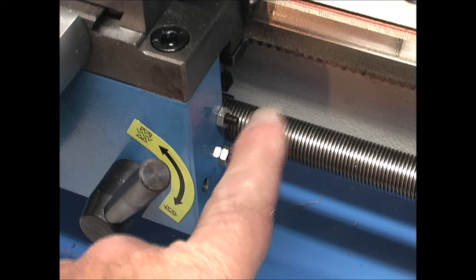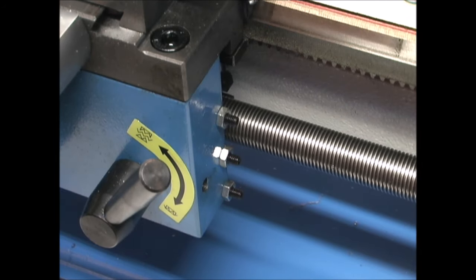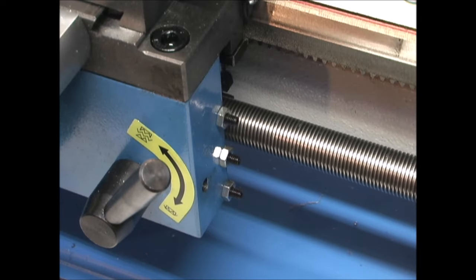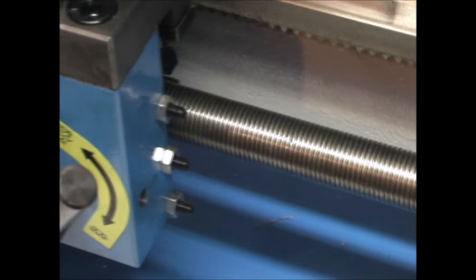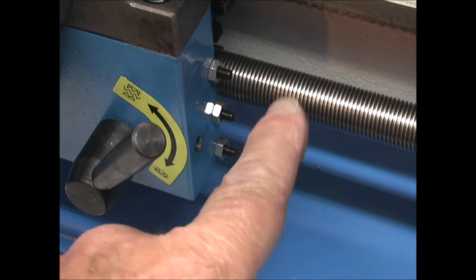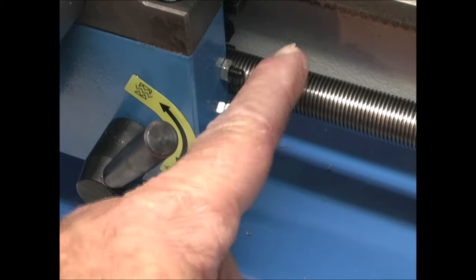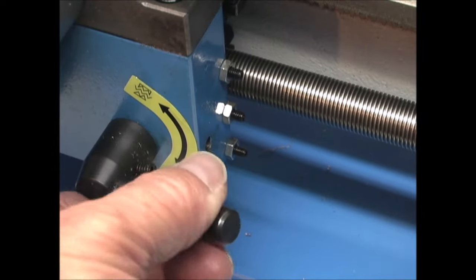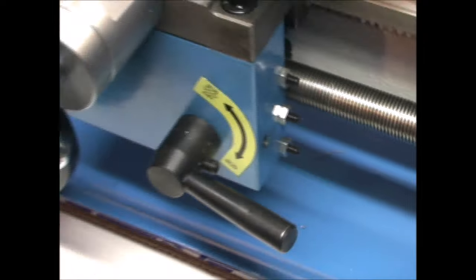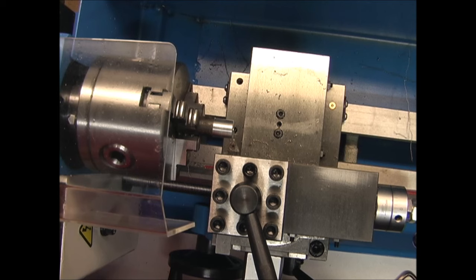Now when I turn the lathe on, you'll see this lead screw turning. You can see the lead screw is turning. So when I rotate this lever down, the half nut will engage with the lead screw and it'll move it automatically. Now when I turn it on, you can see it cut using the auto feed.